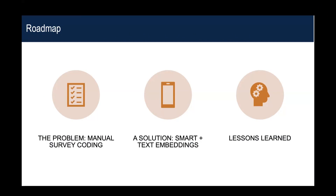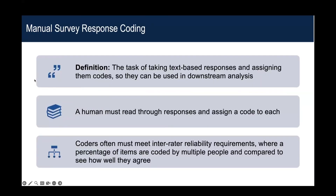When you're collecting a large survey, sometimes there are going to be text-based responses — either an open text response or an 'other' field. In order to use those when you're trying to do downstream analysis, those responses will get coded in a variety of ways. Someone will look through and label those responses by categories so that they can be quantified — to know how many people chose what category.